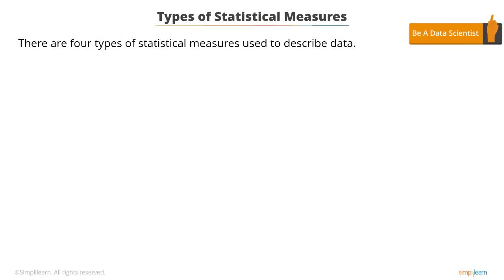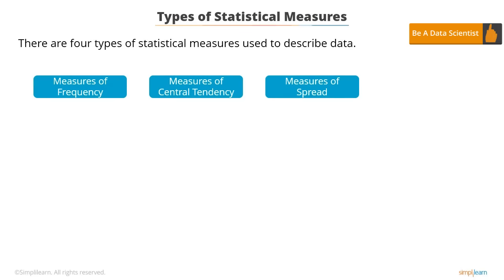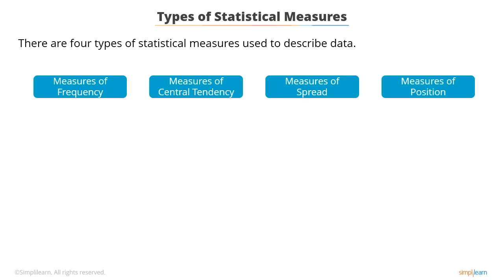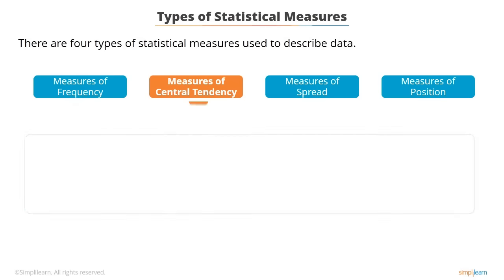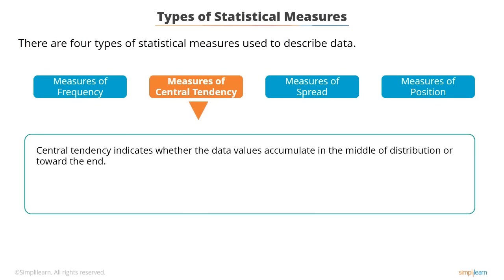Typically there are four types of statistical measures used to describe the data: measures of frequency, measures of central tendency, measures of spread, and measures of position. Frequency of the data indicates the number of times a particular data value occurs in the given data set. The measures of frequency are number and percentage. Central tendency indicates whether the data values tend to accumulate in the middle of the distribution or toward the end.